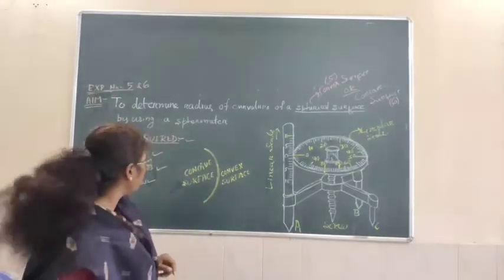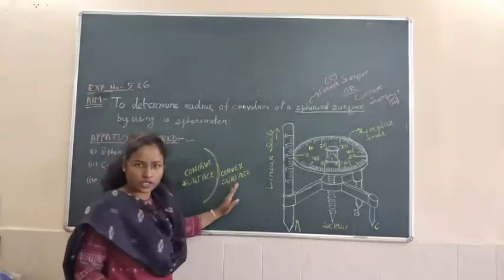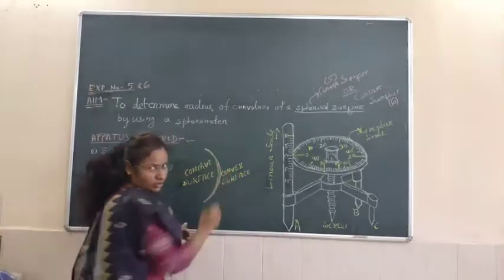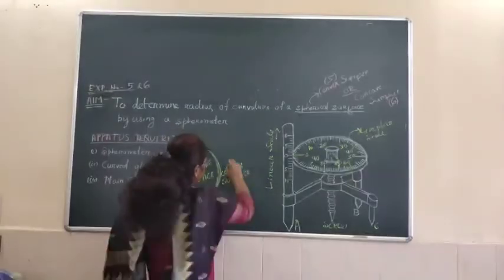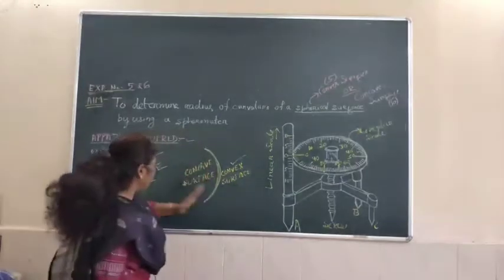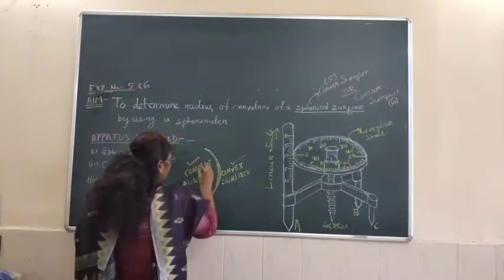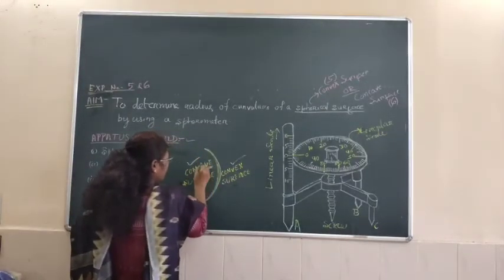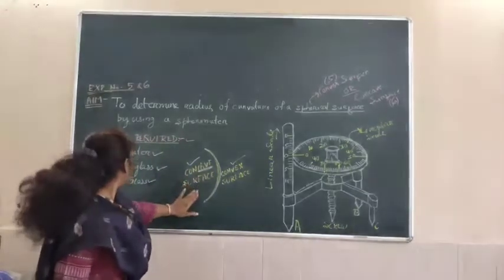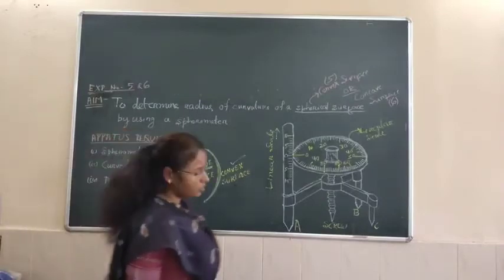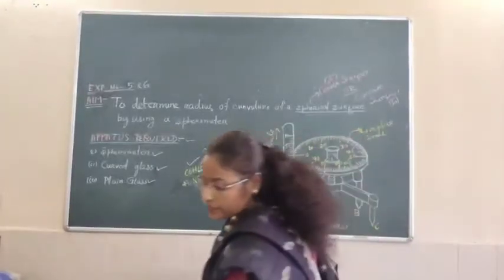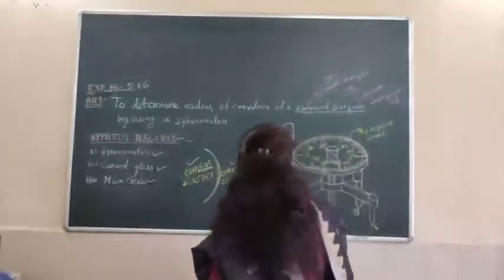As you all know, a curved glass has two surfaces — one which is like the cave and the bulging one. The bulging surface we call the convex surface, and the cave-shaped surface we call the concave surface. This is the concave surface. Now let's look at the apparatus a bit.